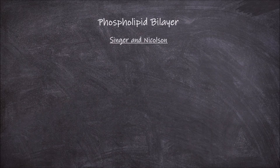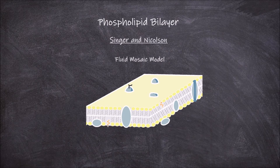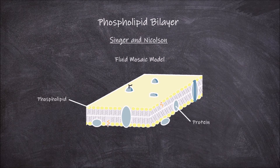In 1972, Singer and Nicholson incorporated this evidence into their model, where proteins were found embedded within and through the membrane. This model is called the fluid mosaic model. The mosaic part of the name comes from proteins embedded in the phospholipid bilayer creating a mosaic appearance. The fluid part comes from the membrane being dynamic — the phospholipids can move, and the embedded proteins move around the phospholipids.